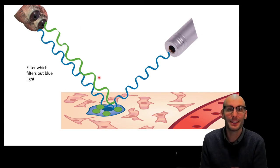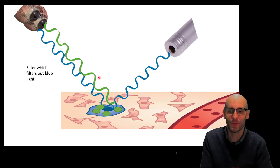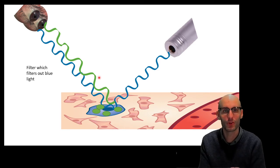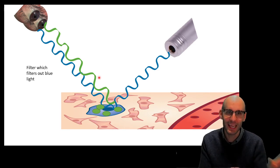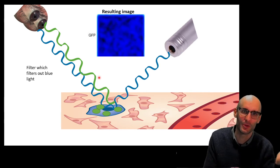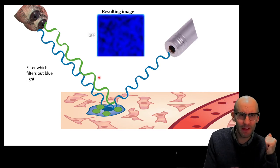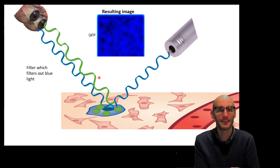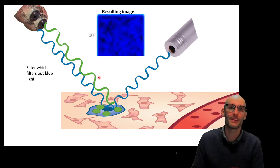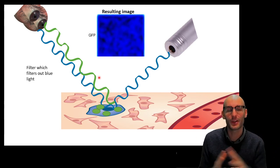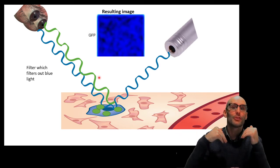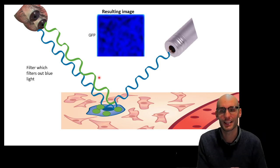Now, what happens if we didn't have the filter? We would get hit with loads of blue light. More excitation blue light would be bouncing off that tissue than any of the emission green wavelength. So the image would just be overwhelmed with the blue signal. That filter is essential. Those two essential elements of fluorescent microscopy are the change in wavelength — the excitation wavelength must drop down in frequency and energy to become the emission wavelength — and we need to filter out the excitation color.